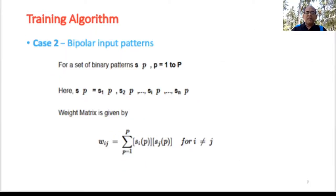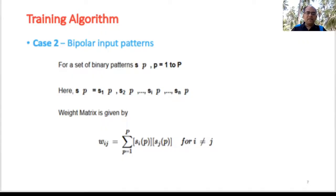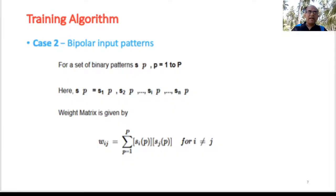For a bipolar input pattern, the weight update is computed as: w_ij = Σ (p=1 to P) s_i(p)·s_j(p), again with the condition i ≠ j. So binary input takes values 0 and 1, while bipolar input takes values −1 and +1.